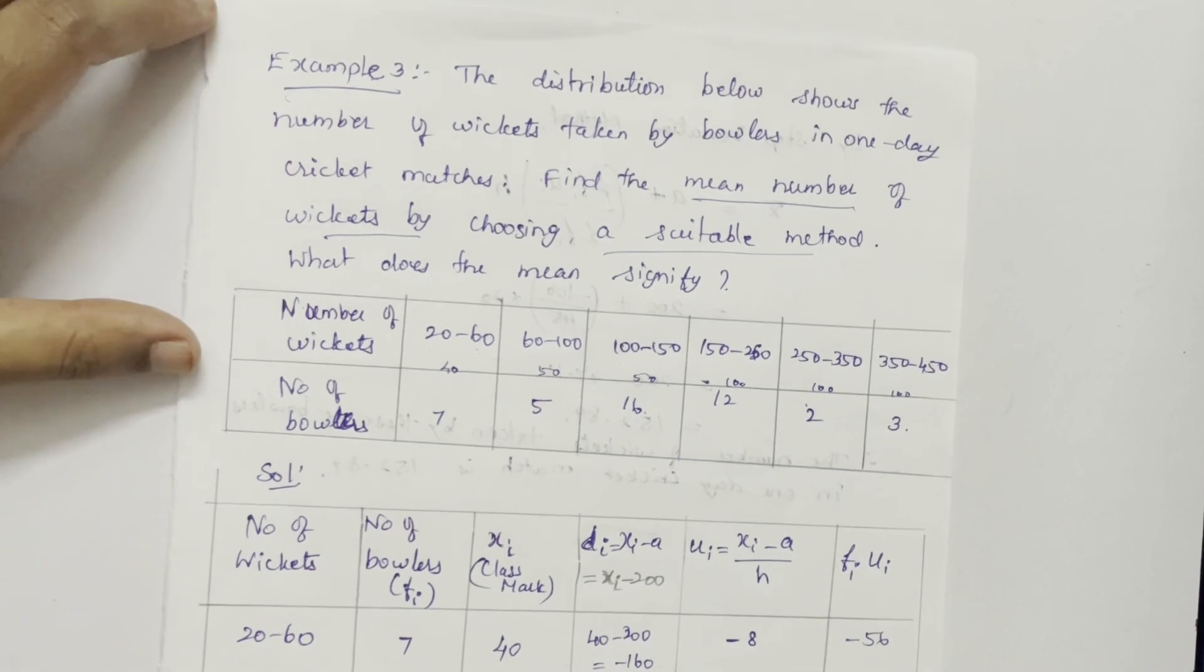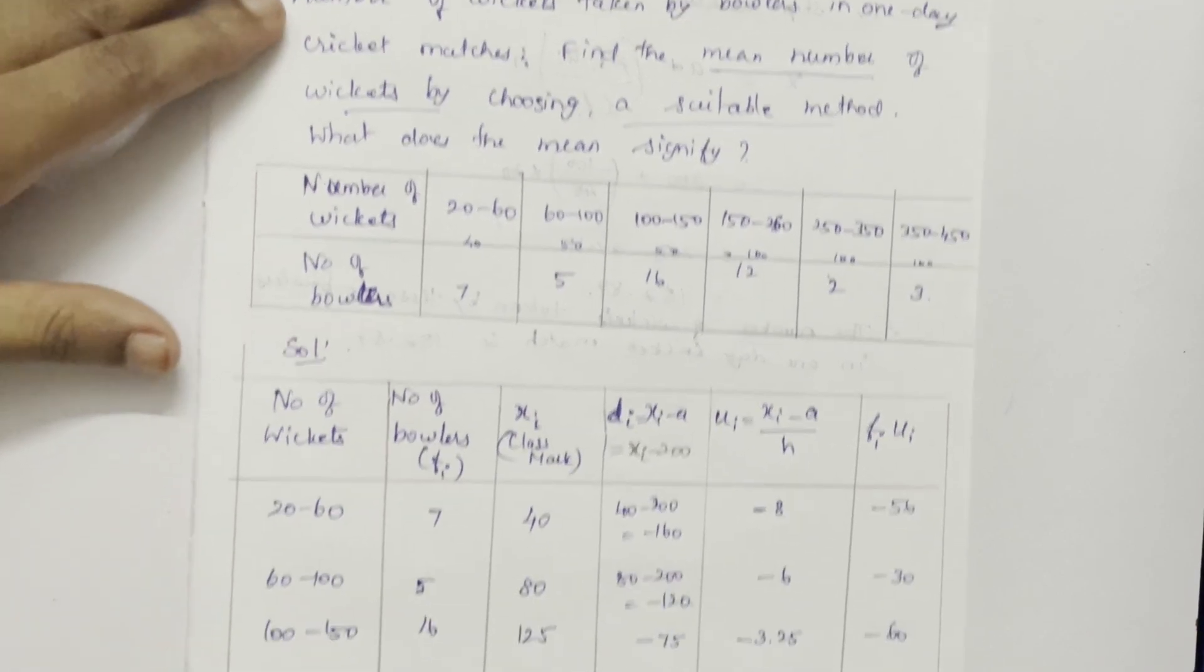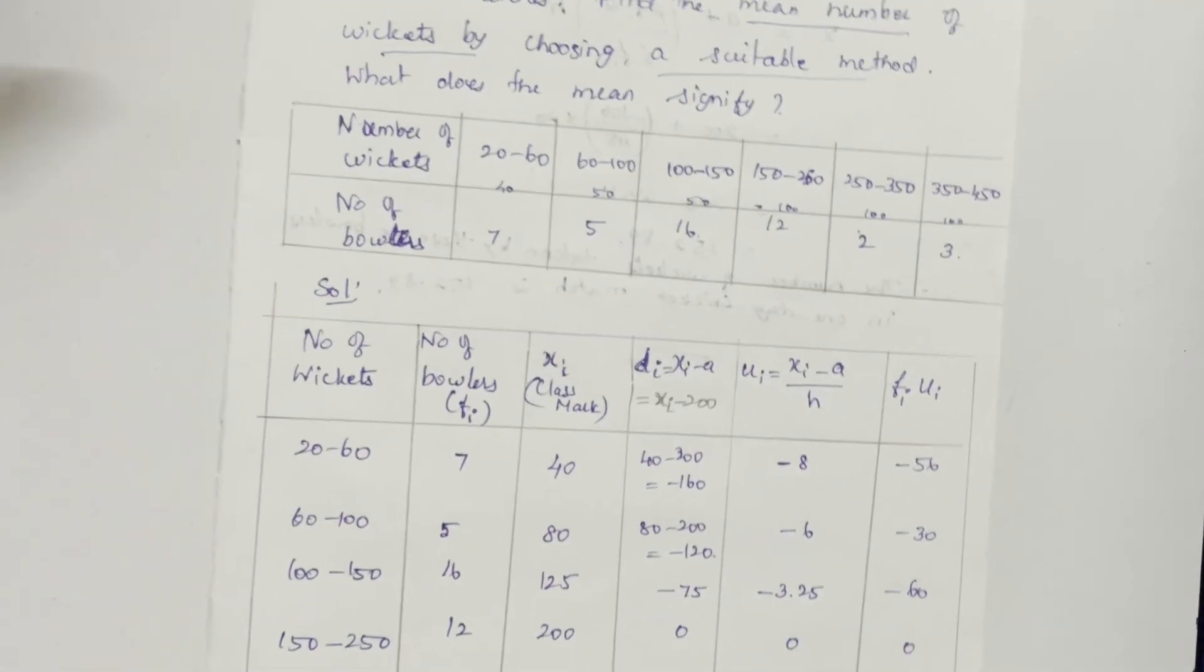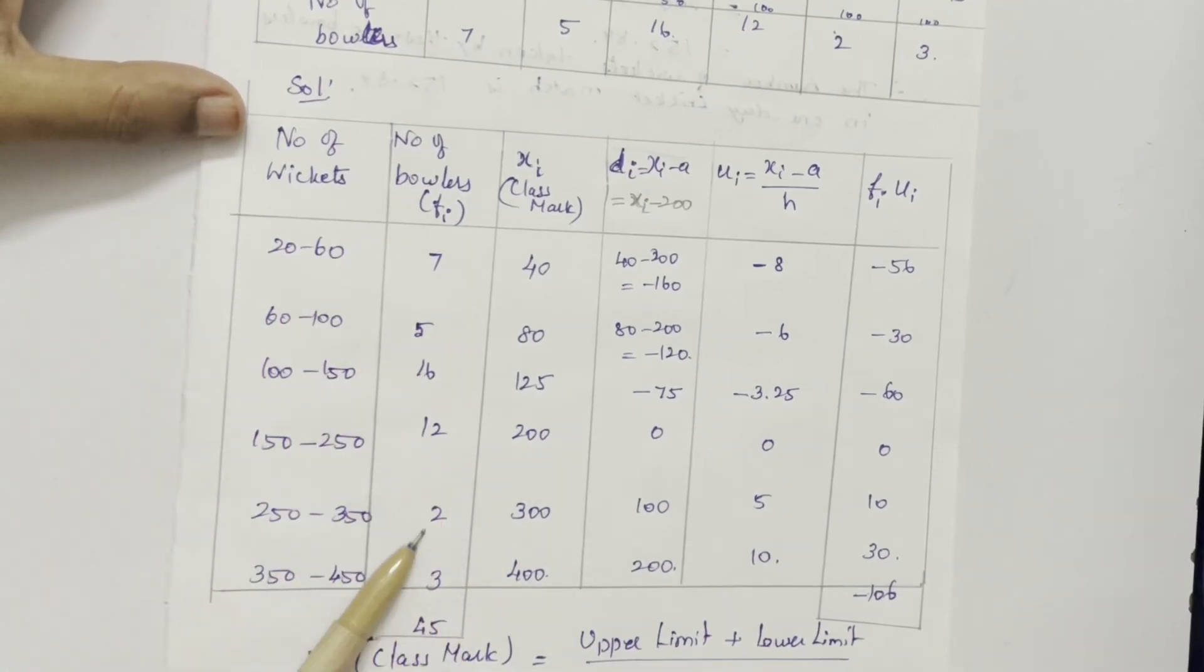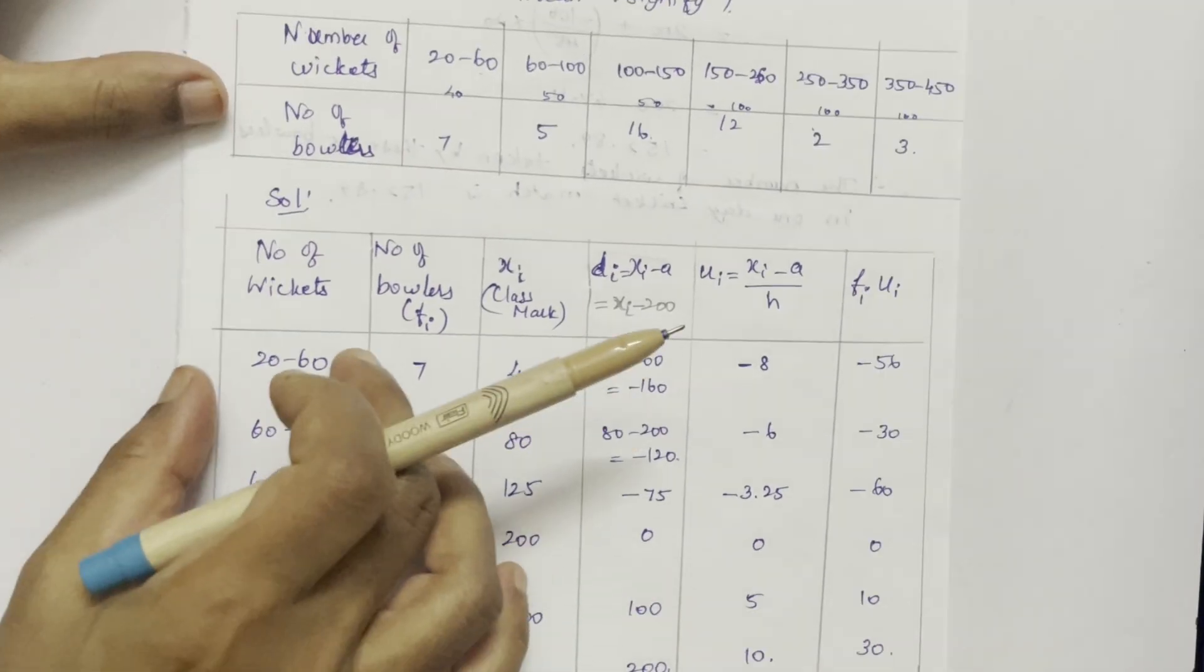So now you conclude what method has to be taken. So now we can proceed with that. Number of wickets has taken here, number of bowlers. From intervals, we have to find XI.